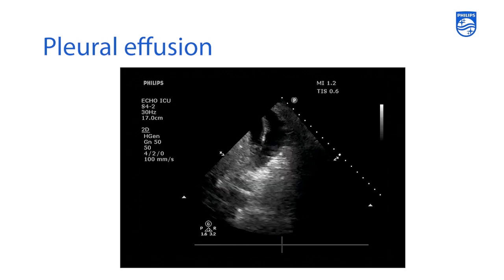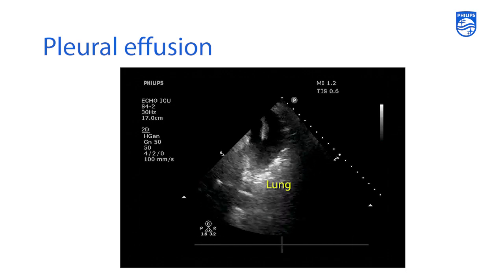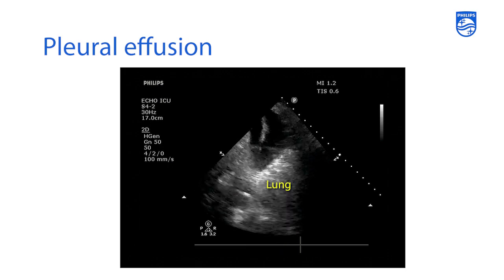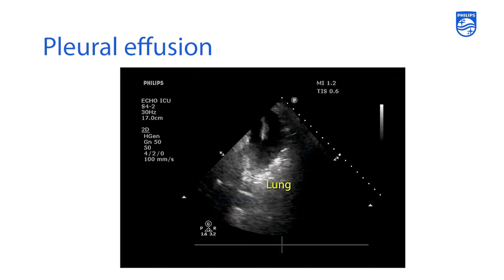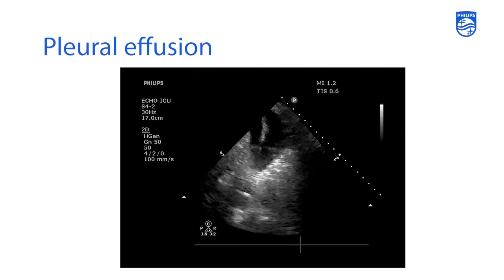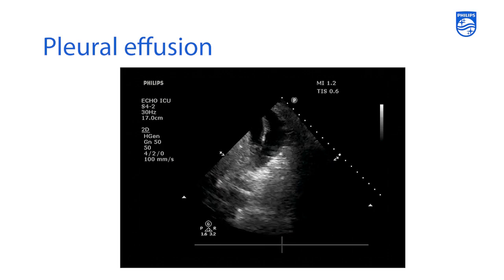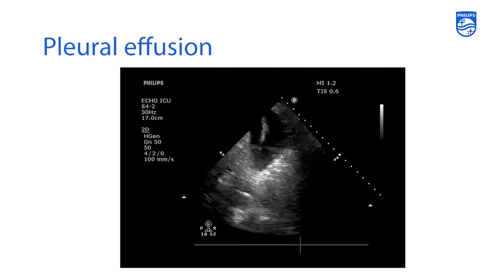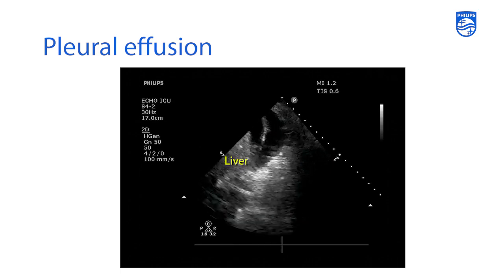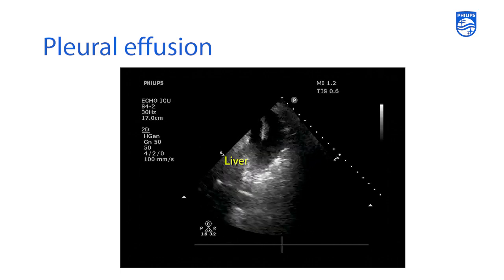An example of this here where you see consolidated lung that's kind of bright and squished down on the right-hand side of the screen, this black fluid on top of it, and a little bit more of gray material which is actually liver on the left-hand side of the image.